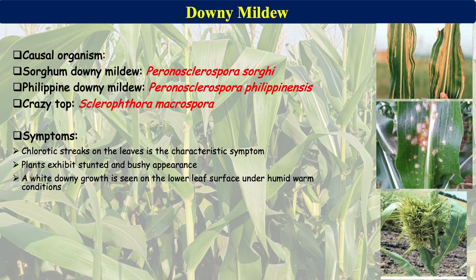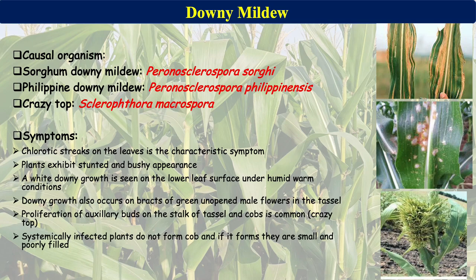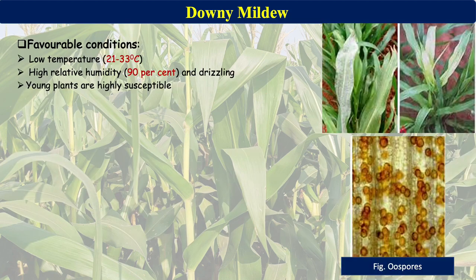Infected plants exhibit a stunted and bushy appearance. A white downy growth is visible on the lower leaf surface under humid and warm conditions. The downy growth also occurs on the breadth of green unopened male flowers in the tassels. Proliferation of axillary buds on the stalk of tassels and the cob is common, especially in Crazy Top disease caused by Sclerophthora macrospora. Systemically infected plants fail to form a cob, or if formed, the cobs are small and poorly developed.